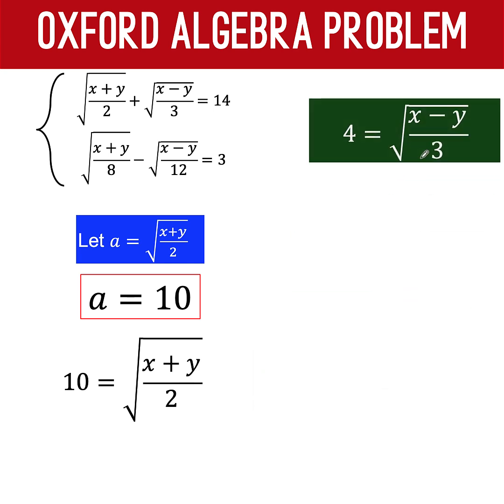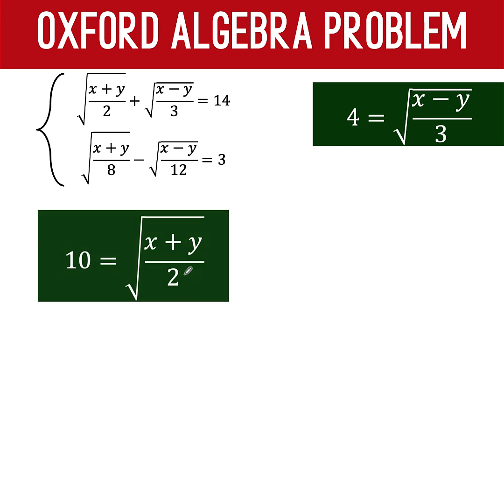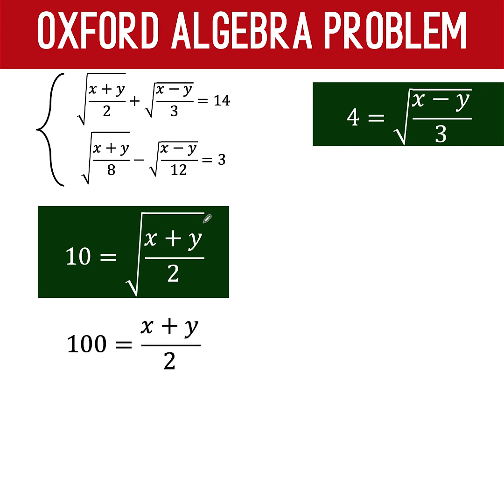Now, let's set aside this equation here. And let's work with the first equation. So, solving now for x plus y here, we square both sides. So, 10 squared becomes 100. And squaring this will eliminate the radical symbol. And so, the right side becomes the radicand x plus y over 2. Multiply both sides by 2 to get 200 at the left side. And copy x plus y.